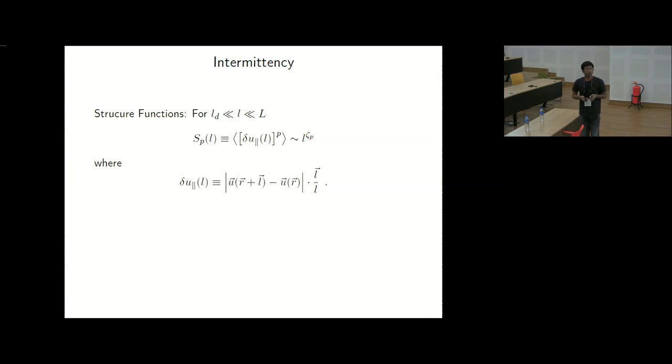Then in Kolmogorov theory, these increments are functions of epsilon. Epsilon is the dissipative energy dissipation rate, average energy dissipation rate. L is the length scale. From simple dimensional counting, you can find that this velocity increment is proportional to L to the power 1/3. From there, it is clear that zeta_P is P/3.